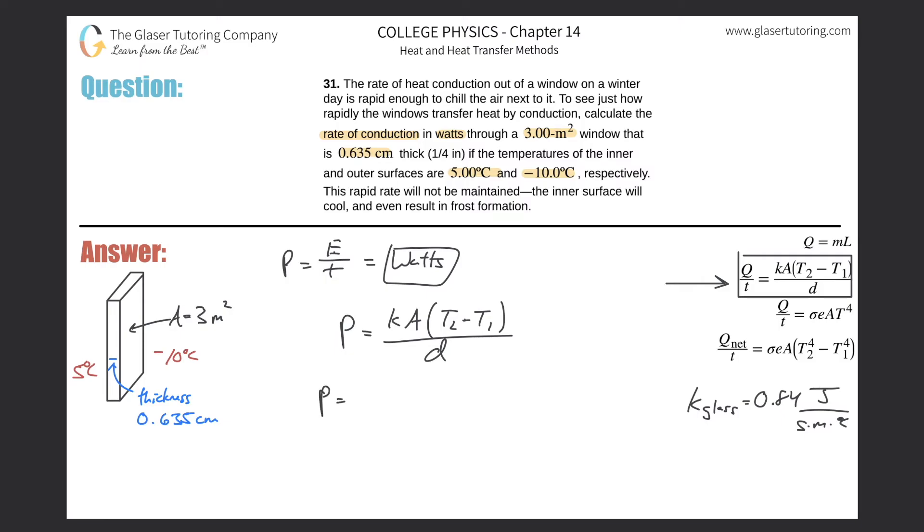Let's plug it all in. The constant here for glass, you got to look that up, it's 0.84. The area they told us is three square meters. The temperature difference, plug in the larger first. So this is five minus negative 10. We'll consider the sign after we calculate this.